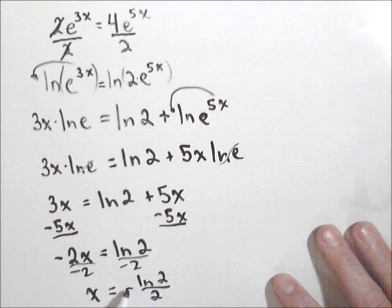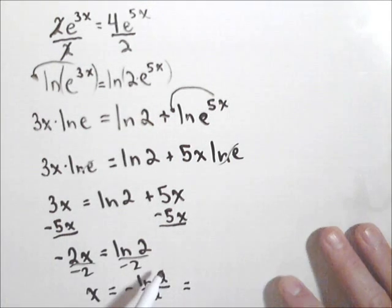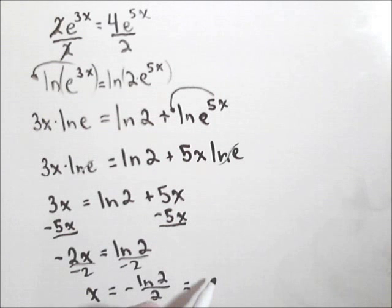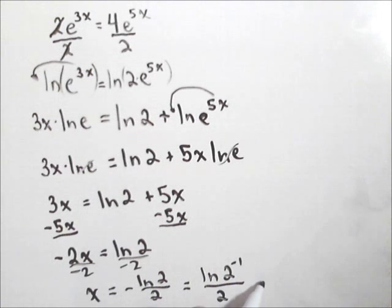Now one thing we can do with that negative out front, we can actually put that back into the exponent of 2, which would give us ln of 2 to the minus 1 over 2, which is ln of one half over 2. Another acceptable way of writing the answer. So depending on how you decide to simplify, you might write it in one form or the other.